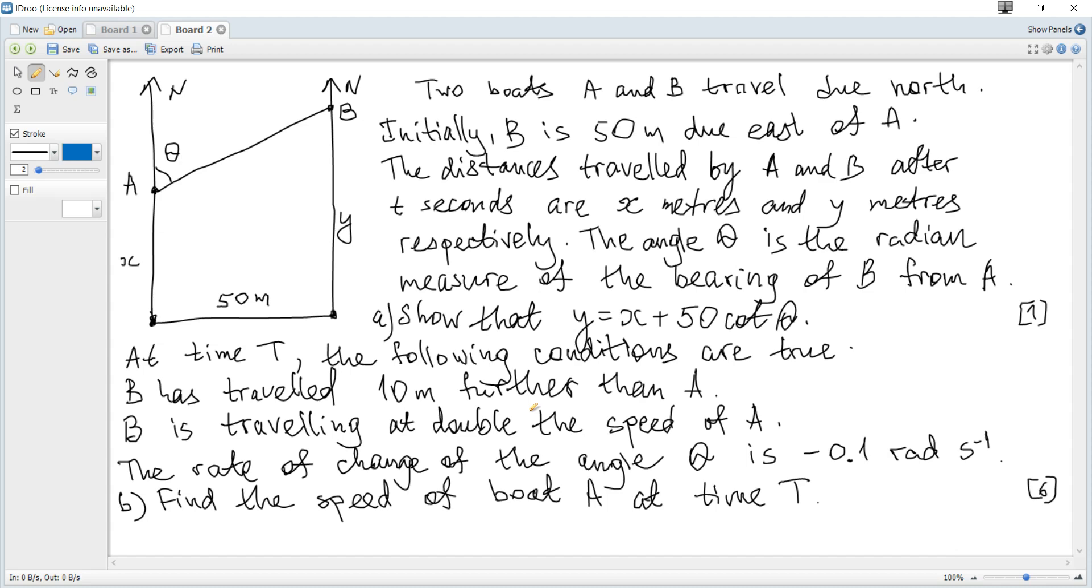Two boats A and B travel due north. Initially B is 50 meters due east of A. The distances traveled by A and B after t seconds are x meters and y meters respectively. The angle theta is the radian measure of the bearing of B from A.